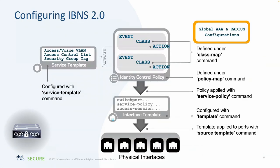From an IBNS 2.0 perspective, we have an identity control policy which contains our events, classes, and actions. We have a service template used to define services like access VLANs, voice VLANs, access control lists, and SGTs. We have interface templates which can be used in change of authorization and can be statically or dynamically attached to interfaces for specific sessions. And then we have our physical interfaces where the devices connect.